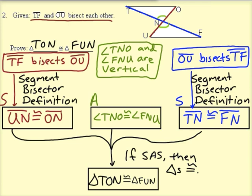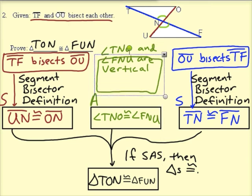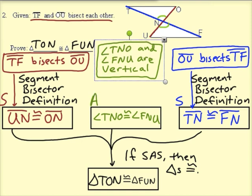So there's the statement, TNO and FNU are vertical angles. And as a result, vertical angles are congruent.